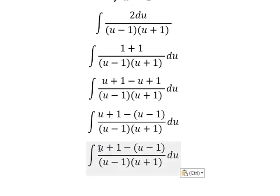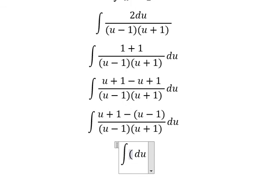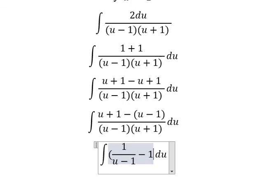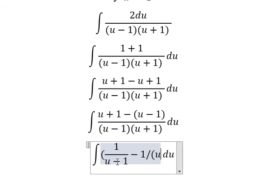So we know that u plus 1 divided by u plus 1, u minus 1 divided by u minus 1. So we have 1 over u minus 1 minus 1 over u plus 1.